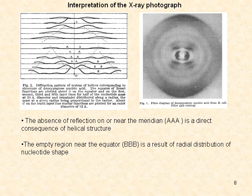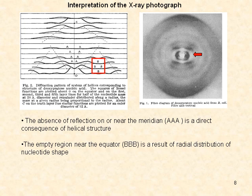Additionally, the absence of reflection on or near the meridian is a direct consequence of helical structure, and the empty region near the equator is a result of radial distribution of nucleotide shape.